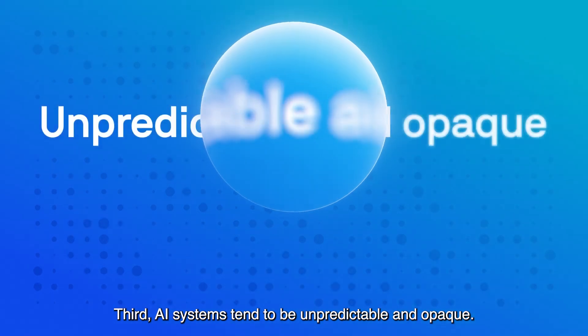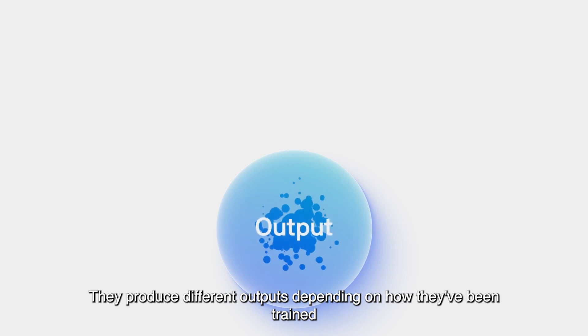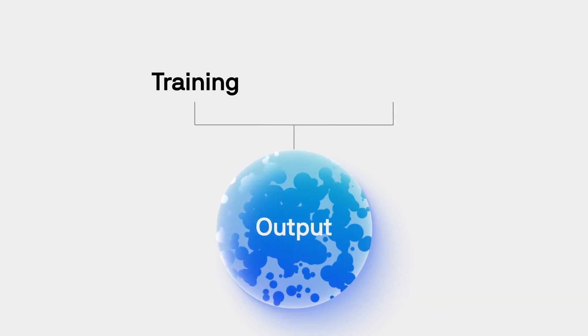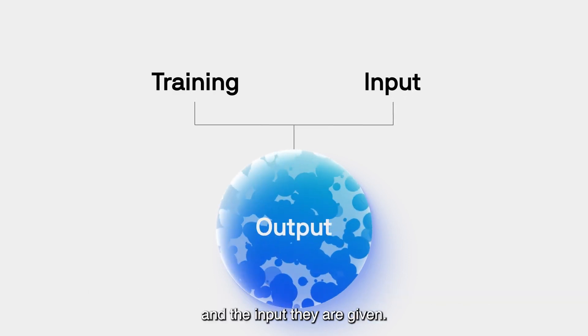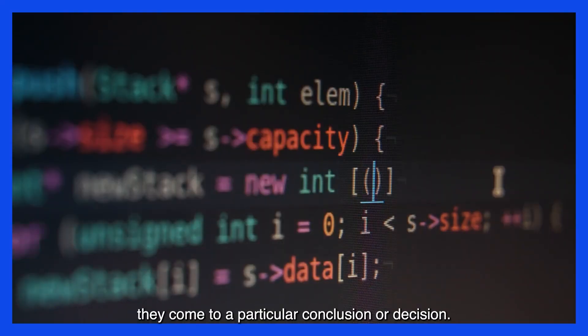Third, AI systems tend to be unpredictable and opaque. They produce different outputs depending on how they've been trained and the input they are given. It takes special effort to understand how and why they come to a particular conclusion or decision.